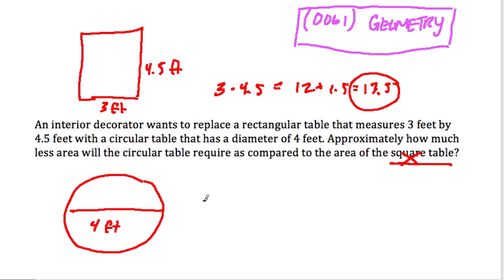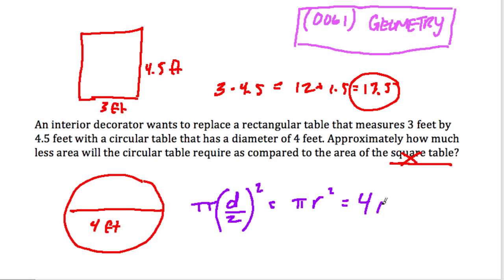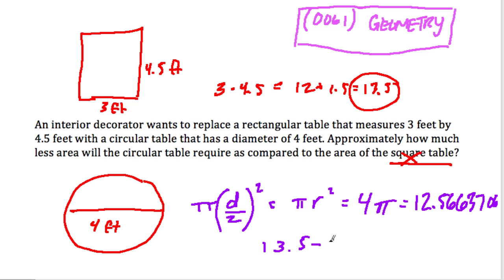The circle, of course, is based on pi times radius squared. The diameter is 4 feet, so the radius is 2. The area is 4π, which is approximately 12.5663706. So we subtract 12.566 from 13.5, giving us about a 0.93 square foot savings.